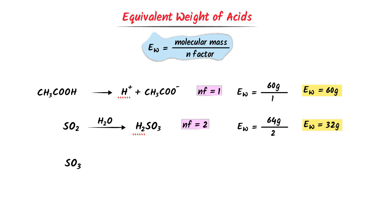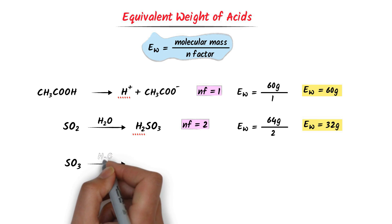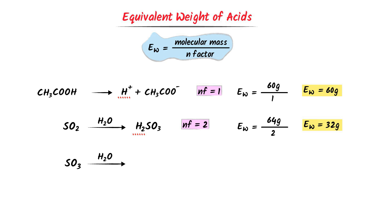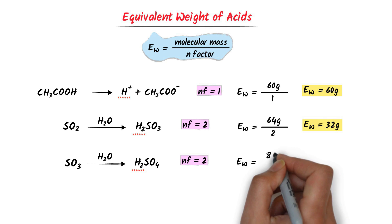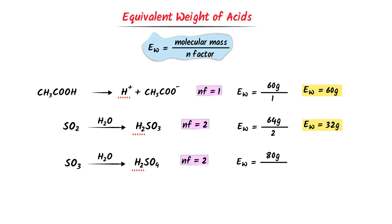In case of sulfur trioxide, I again add water to it. I get H2SO4. There are 2 hydrogen ions, so the N factor of sulfur trioxide is 2. Its equivalent weight is equal to the molecular weight of sulfur trioxide, which is 80 gram, upon N factor which is 2. After calculation, I get 40 gram. So the equivalent weight of sulfur trioxide is 40 gram.